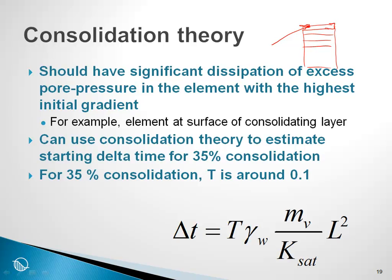If we make the assumption that we would like to look at the change in pore pressure with about 35% consolidation in the first element, and if we go back to the theory of consolidation in most textbooks, we have what is known as a time factor. A time factor for 35% consolidation is around 0.1. You may recall from your consolidation theory that the delta t is related by this equation, where this is the well-known time factor.